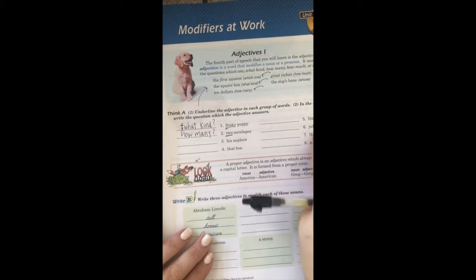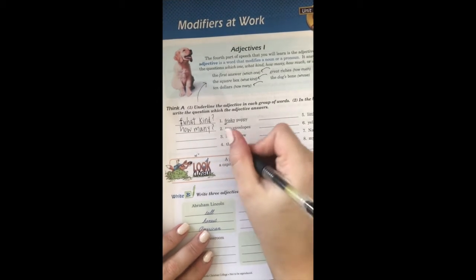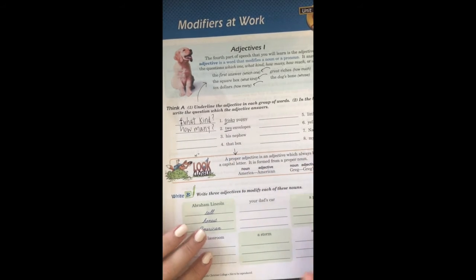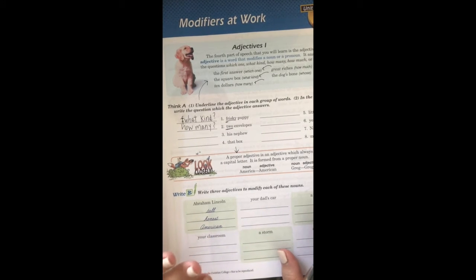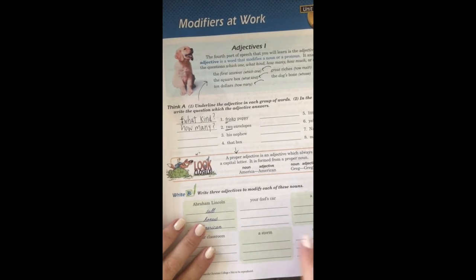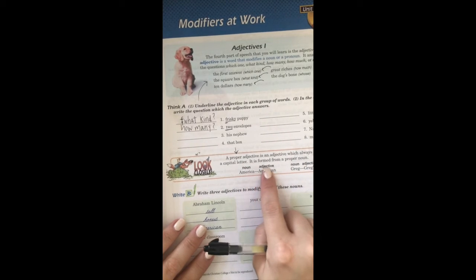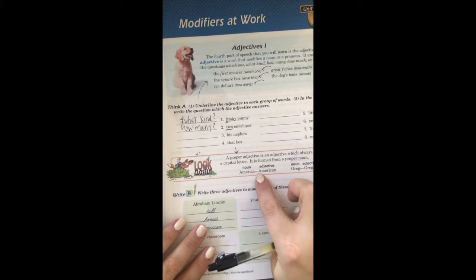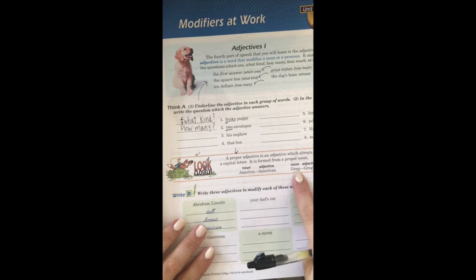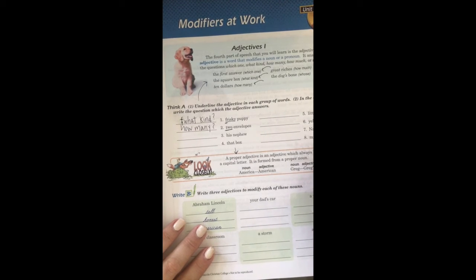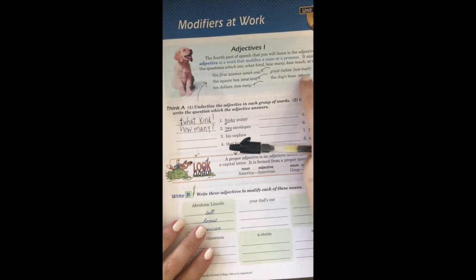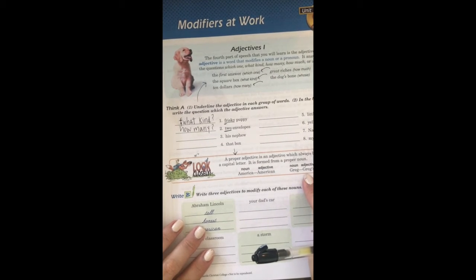Down here we have proper adjectives. As we know, every time we learn about a part of speech that is proper, we know that they're usually capitalized. If you have an adjective that is proper — for example, 'American' comes from 'America' — make sure that it is capitalized. Similarly, if you have a name, like 'Greg' or 'Greg's,' and you're using it to answer 'whose,' make sure to capitalize that name.